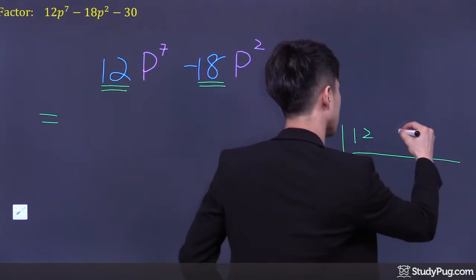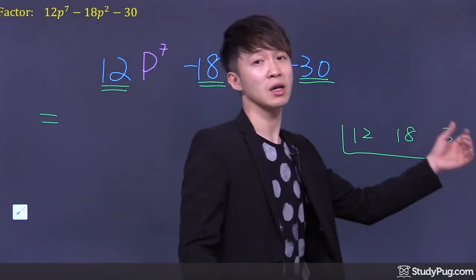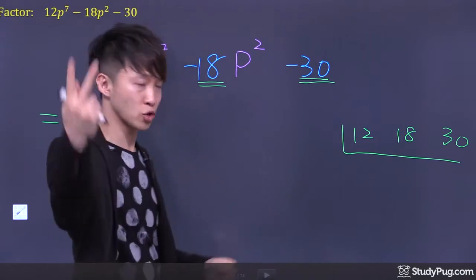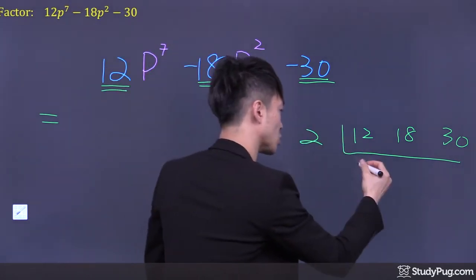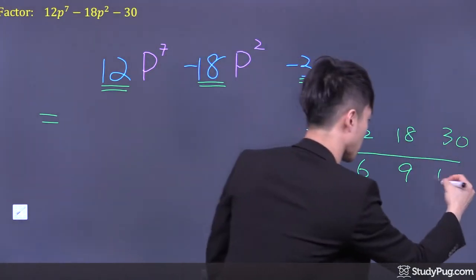12, 18, and 30. Since they are all even numbers, they must be divisible by 2. 12 divided by 2 is 6. 18 divided by 2 is 9. 30 divided by 2, we get 15.